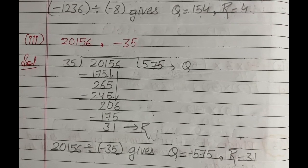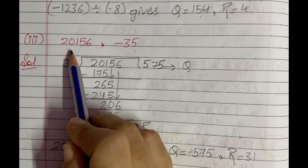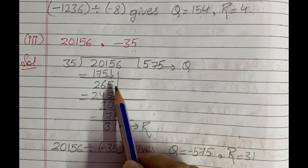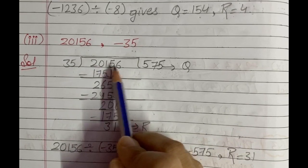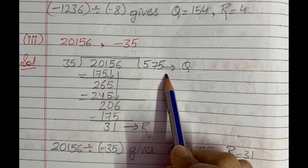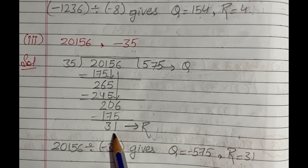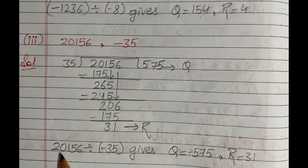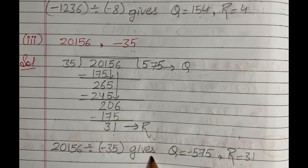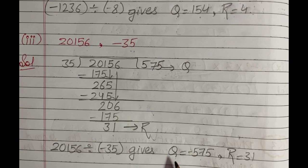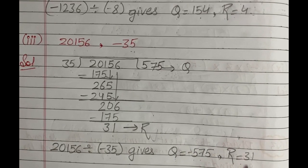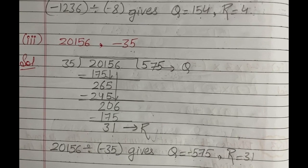Next, the third part: (20156, -35). We divide 20156 by 35, getting quotient 575 and remainder 31. Since we are dividing 20156 by -35, the quotient will be negative according to the rules. So quotient is -575 and remainder is 31.